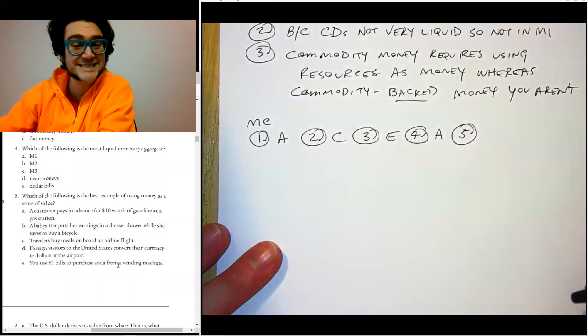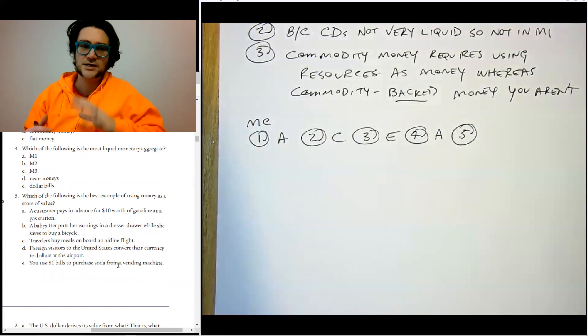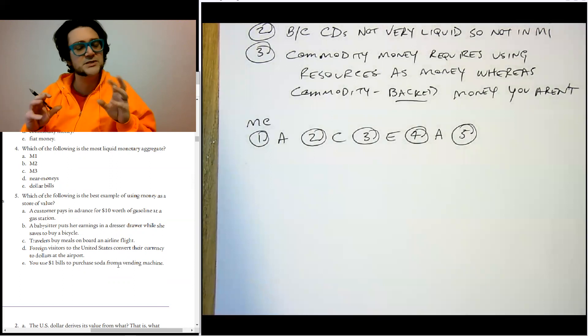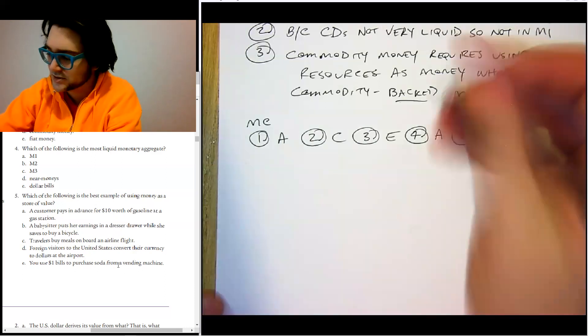Number five, which of the following is the best example of using money as a store of value? A customer pays in advance for $10 worth of gas? No, that's medium of exchange. Babysitter puts her earnings in a dresser drawer while she saves to buy a bicycle. That's store of value because she's trying to keep the value. Travelers buy meals on board an airline flight. That's medium of exchange. Foreign visitors to the U.S. convert their currency to dollars at the airport. That's not really any of the functions of money. The correct answer is B.